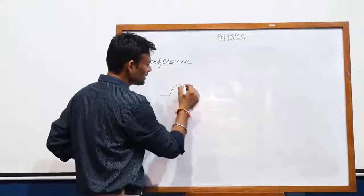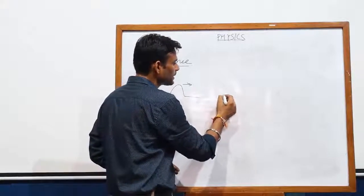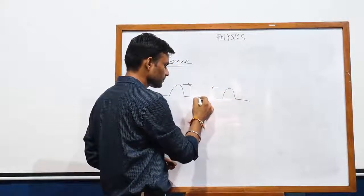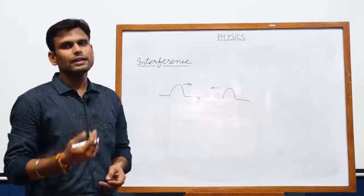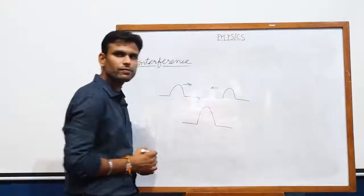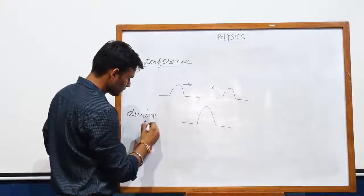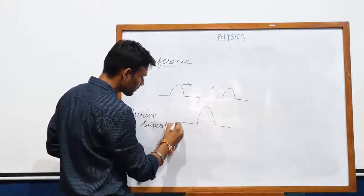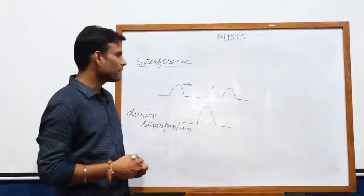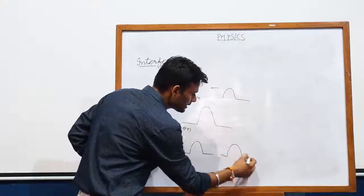Suppose there is a light beam propagating in the positive x direction and another light beam propagating in the negative x direction. When they superimpose, the resultant amplitude changes. This phenomenon occurs during superposition, and after superposition, both of these light beams travel in their initial direction.